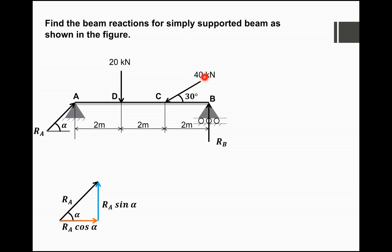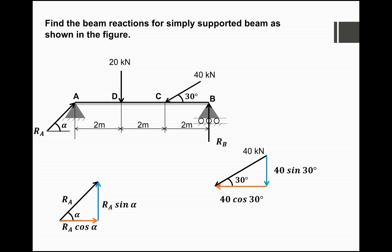Similarly, we resolve the 40 kN load into its two components. Since 40 kN makes an angle of 30 degrees with the horizontal, it has two components: 40·cos(30°) as the adjacent (horizontal) component and 40·sin(30°) as the opposite (vertical) component.